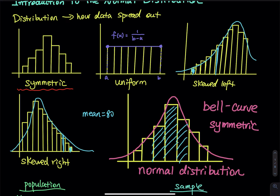For skewed left and skewed right, the mean is not in the center. But for symmetric and uniform distribution, we have the mean right in the middle, meaning most of the people are right in the middle. So if the score follows normal distribution and mean equals 80, most people score around 80 points. That is what normal means — the tallest bars are right in the middle with the highest frequency.